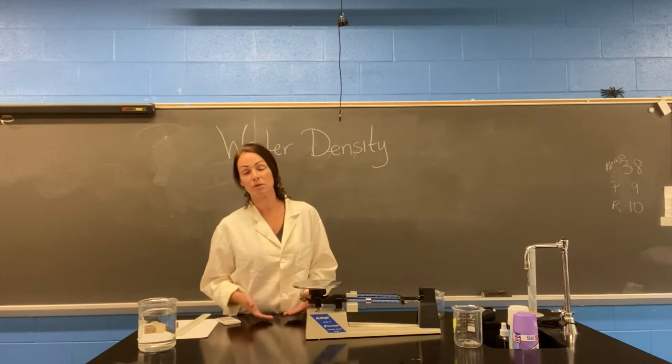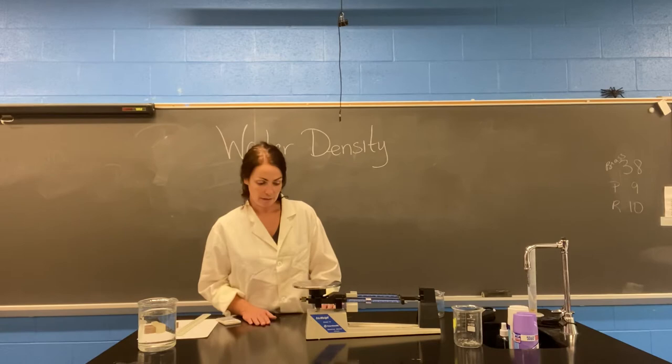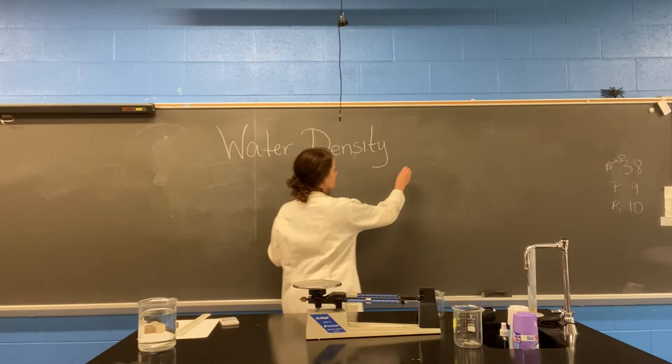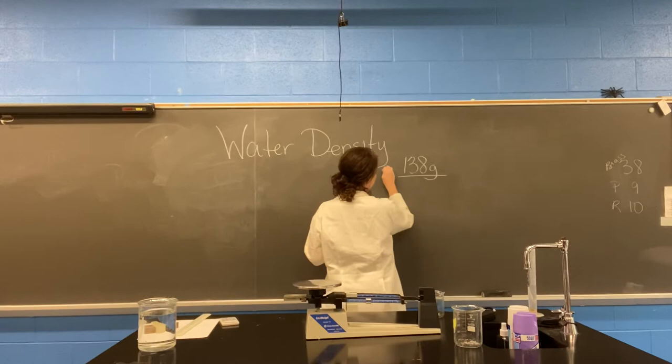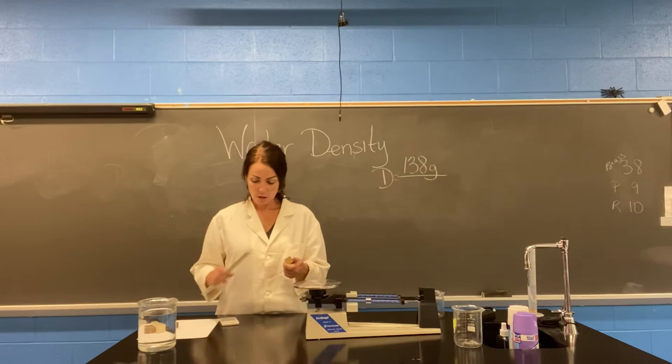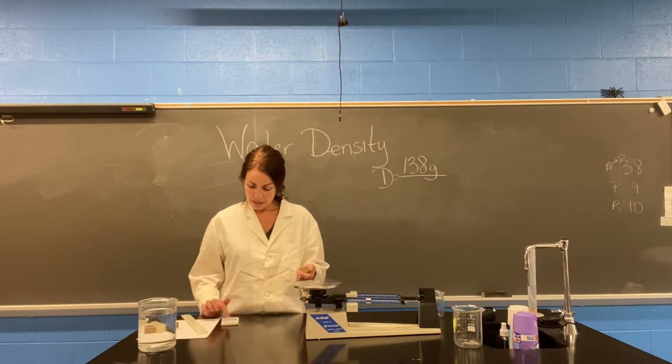We're going to take a look again at our brass block. It had a mass of 138 grams. We measured the length times the width times the height, which in this case was 2.5 times 2.5 times 2.5, and what we found was that's 15.625.